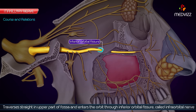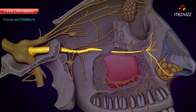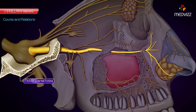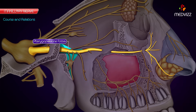Hence it is called the infraorbital nerve. The infraorbital nerve, in fact a continuation of the maxillary nerve, runs forwards along the floor of the orbit in the infraorbital groove and appears on the face through the infraorbital foramen. In its course, the maxillary nerve traverses four regions in succession: the middle cranial fossa, the pterygopalatine fossa, the orbit, and the face.